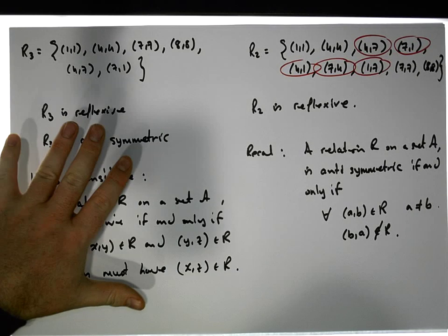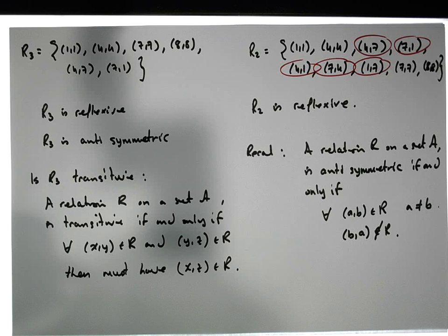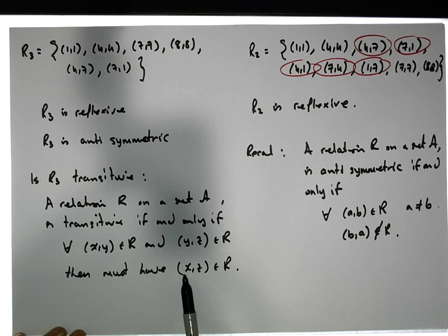So for this to be transitive, for this relation here to be transitive, we should be able to go anytime we can go from x to y and y to z, we should be able to go from x to z.